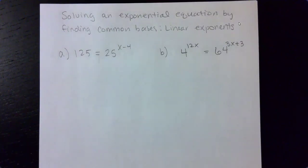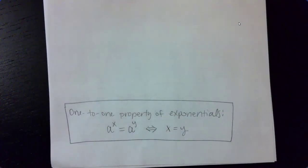This topic is solving an exponential equation by finding common bases with linear exponents. The rule or property that we're going to be using is called the one-to-one property of exponentials.